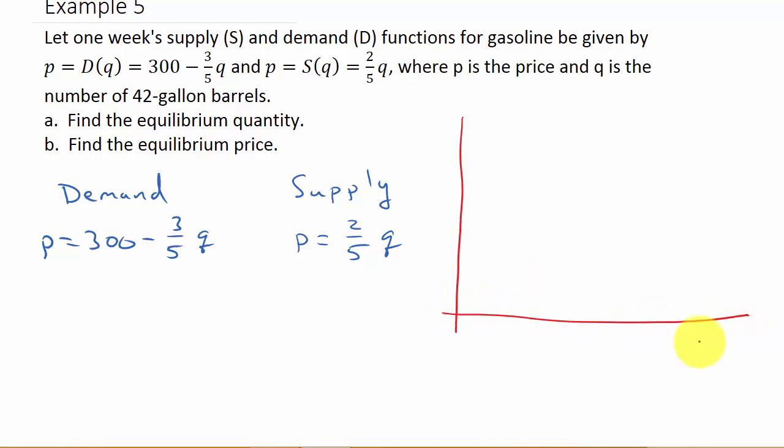The demand function has a y-intercept of 300, and the slope is negative so it comes down like this. The supply function is going up because it has a positive slope.